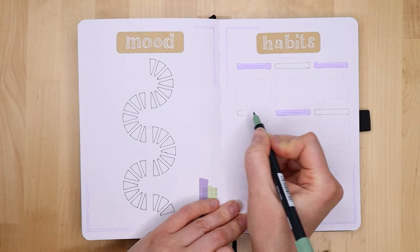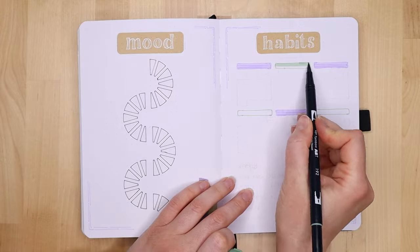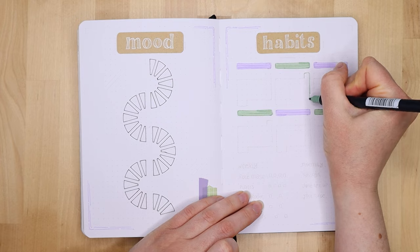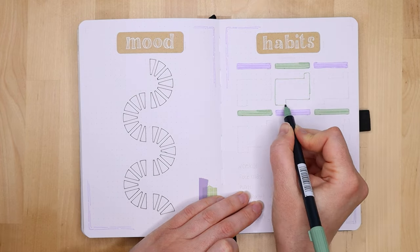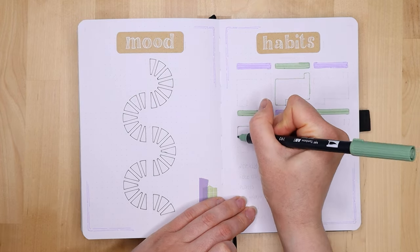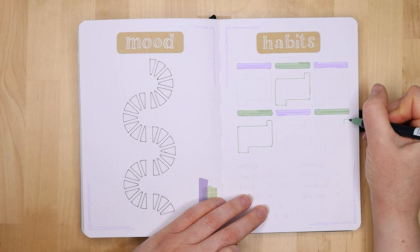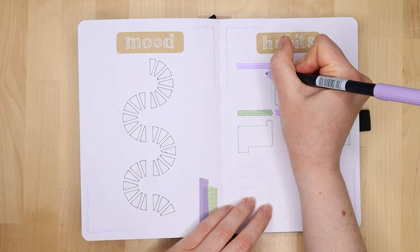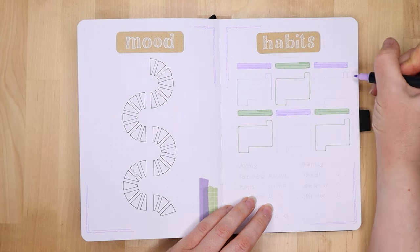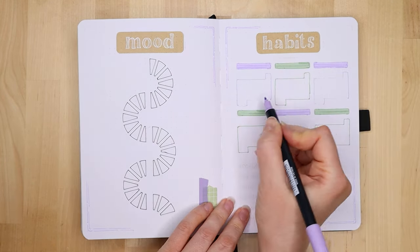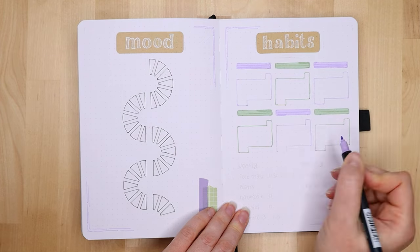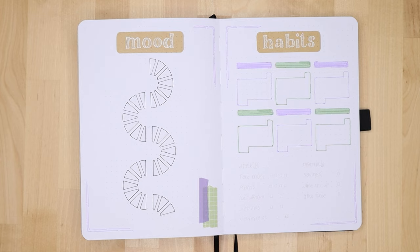I've started to do double coloring on my mood trackers as well where I can highlight that I'm happy that day and I was productive and I found that that's something that really appeals to me as well. On the right hand side the boxes are for my daily habits and at the bottom that's my weekly and monthly habits.